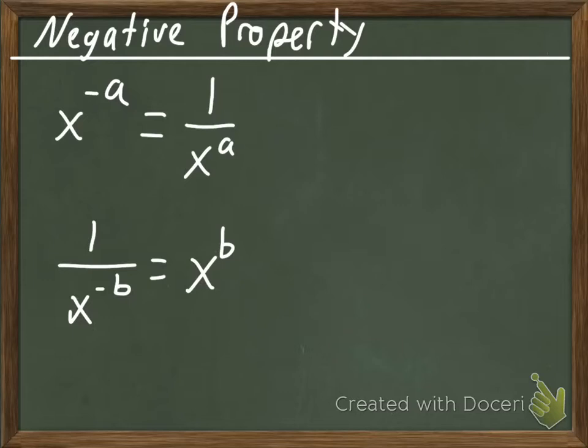If you recall, everything is in a fraction. It either has something over it or has something under it. And if you don't see it, then it's one. So this x to the negative a is actually x to the negative a over one.